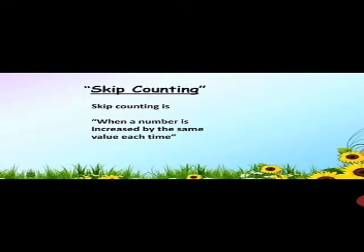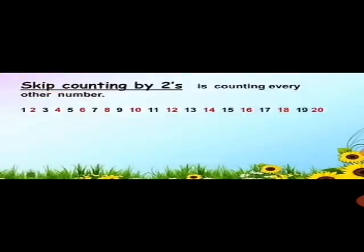First, tell me how many of your body parts come in twos. Yes — your eyes, your ears are two in number. Similarly, your hands and your feet are also two in number. So we are going to start our lecture with skip counting by twos. Skip counting by twos means counting every other number. You can see here: after 2 we count to 4, then 6, then 8 — we are skipping one digit each time.